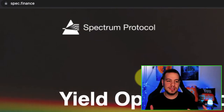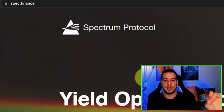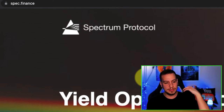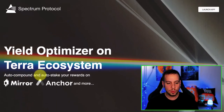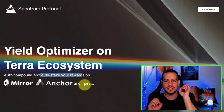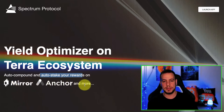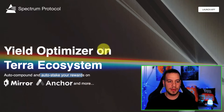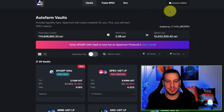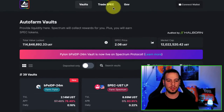This is the website of Spectrum Protocol, spec.finance. Make sure you are on the right domain — there are a lot of phishing attacks around. This is a yield optimizer on the Terra Ecosystem, showing how to compound and how to stake your rewards on Mirror and Anchor and more. We'll understand the difference between auto compound and auto stake by going to the docs, but first a quick look at the protocol.